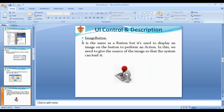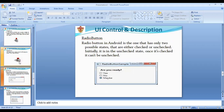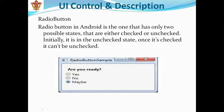We will see the buttons. We have seen before the image button and the toggle button. Now we will see the radio button. The radio button in Android is one that has only two possible states: either checked or unchecked. It means the radio button is a type of button which shows the probability of being checked or unchecked.